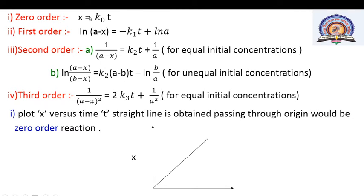For zero order reactions, the integrated rate equation already derived is k₀ = x/t. This equation can be written as x = k₀·t, where x is the concentration, k₀ is the rate constant for zero order reaction, and t is the time. This equation is similar to y = mx, so we plot the graph accordingly.